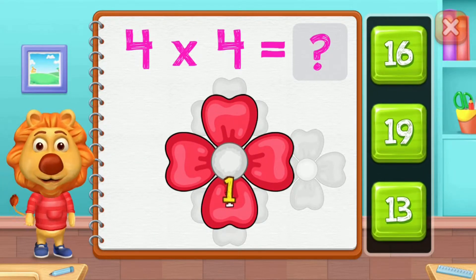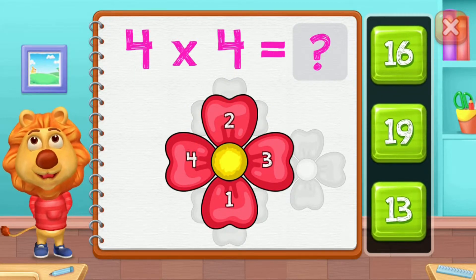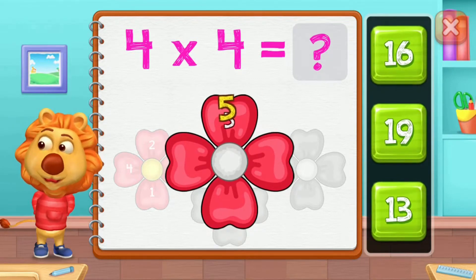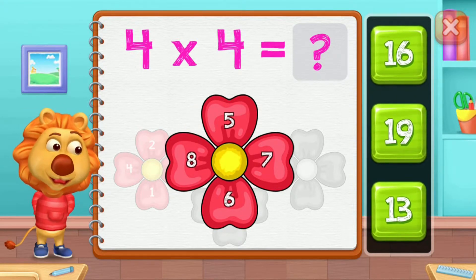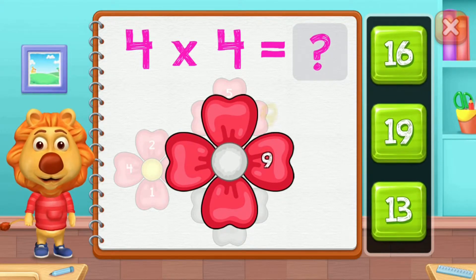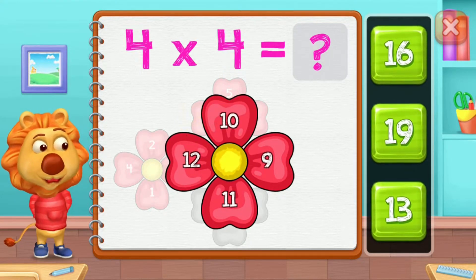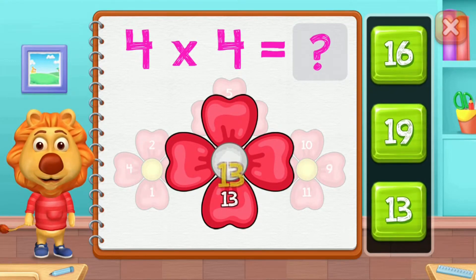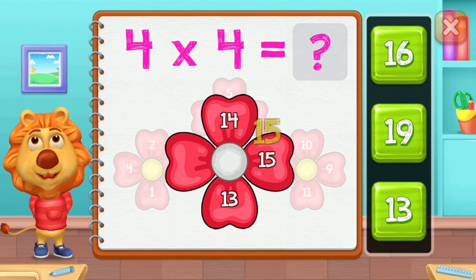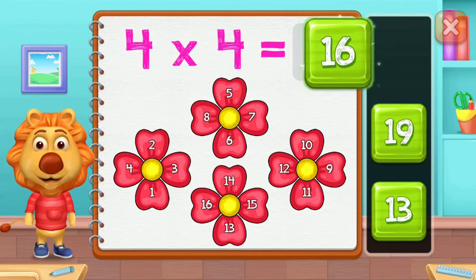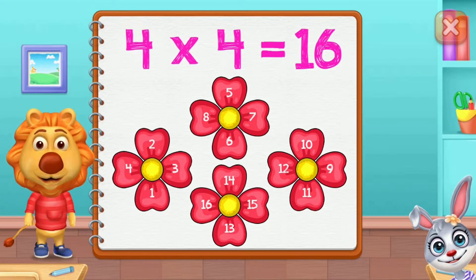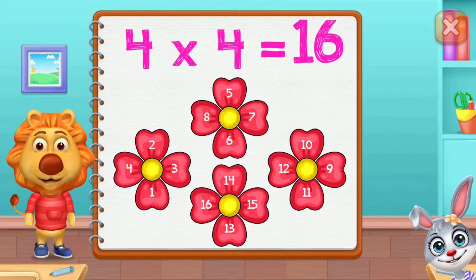One, two, three, four, five, six, seven, eight, nine, ten, eleven, twelve, thirteen, fourteen, fifteen, sixteen. Four groups of four equals sixteen.